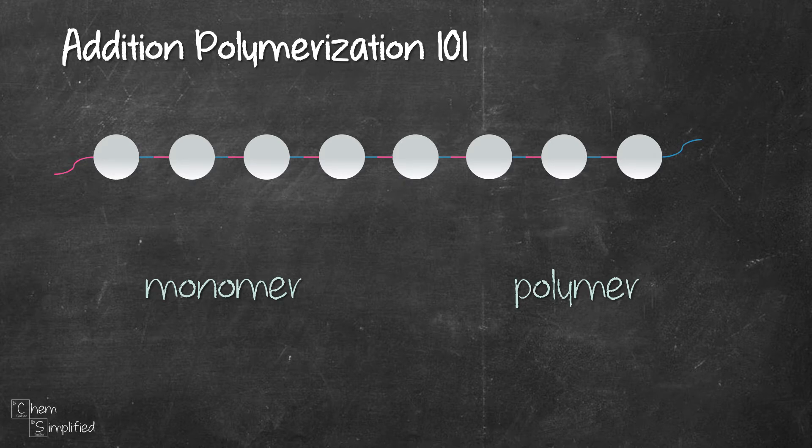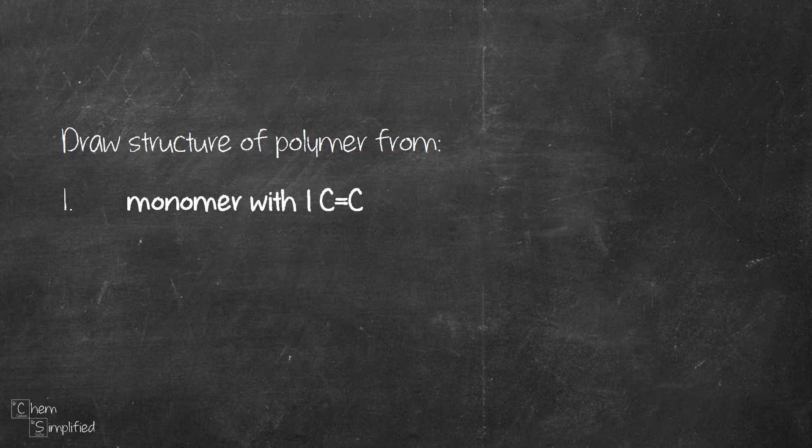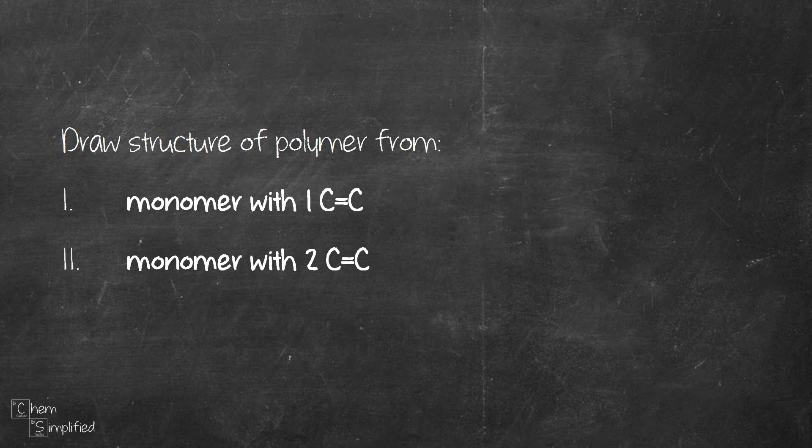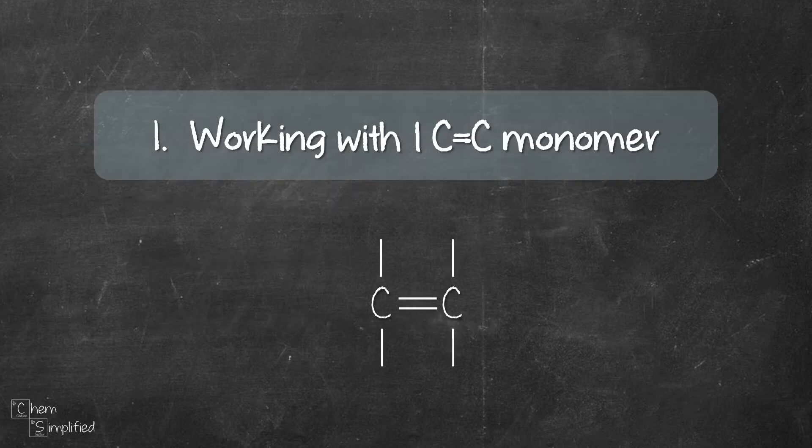This type of polymerization uses up all the atoms in the monomers. That means there's no small molecules like water removed when linking them together. We will draw polymers from different types of monomers in this video. The first one we'll start with is the simplest one consisting of alkene with one C=C double bond. Then we'll advance to monomer with two C=C double bonds. And lastly we'll look at copolymer which is made from two or more monomers.